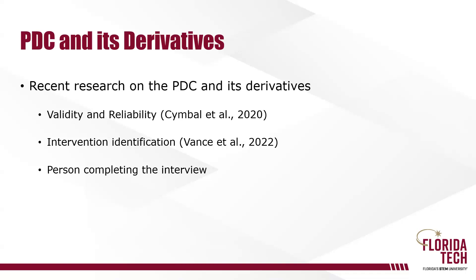Another line of work has involved how we identify the intervention based on the results of the PDC or one of its variants. One way is to establish a cutoff score — for example, any domain scoring above 50% would receive an intervention. Another way is to focus an intervention on just the domain with the highest score. There are varying ways of doing that, and some recent research has focused on which approach is most effective.